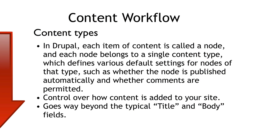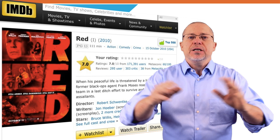In Drupal, every content item is called a node and it belongs to one content type. The content type sets up the parameters — for example, when you publish, is it promoted to the home page by default, are comments allowed, and things like this. But it's also how content gets added to your site, and it goes way beyond the title and body that other CMSs have, because every content type has fields for the specific information you need.